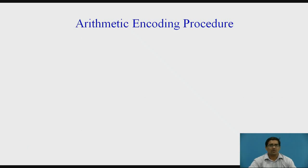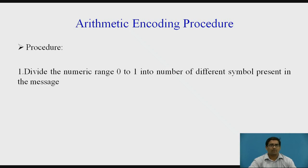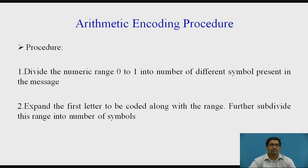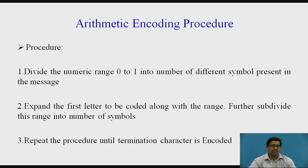Now, Arithmetic Encoding Procedure. We want to see the procedure steps. First step: divide the numeric range 0 to 1 into the number of different symbols present in the message. Second, expand the first letter to be coded along with the range, and further subdivide this range into the number of symbols. Third step: repeat this procedure until the termination character is encoded.